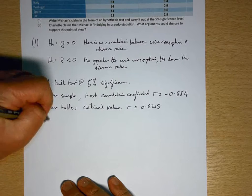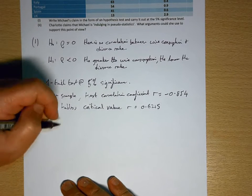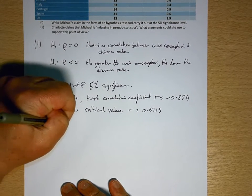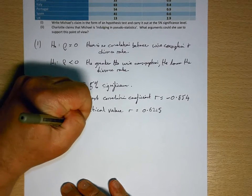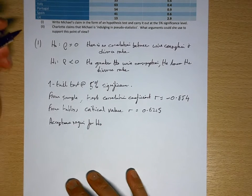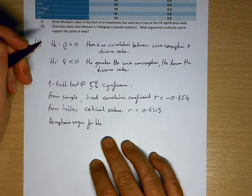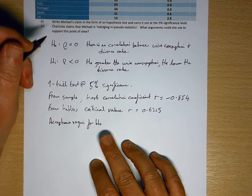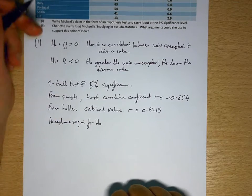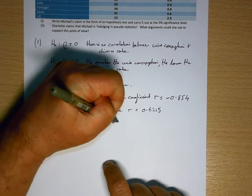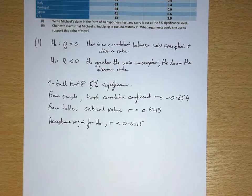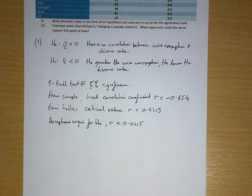So this is going to give us an acceptance region for H0. So the acceptable region, or sorry, the region of R which would mean we accepted the null hypothesis, would be R being less than or equal to 0.6215. We're comparing the positive value.